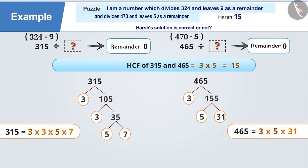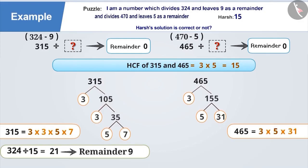Let's check our answer. If we divide 324 by 15, we get 21 with a remainder of 9, which is correct according to the riddle.